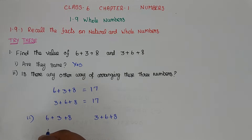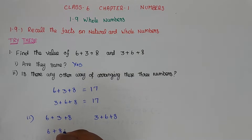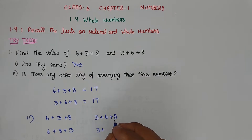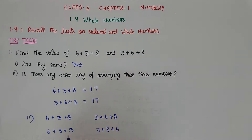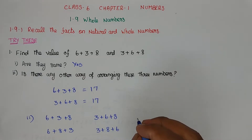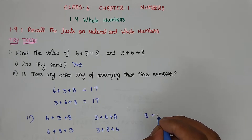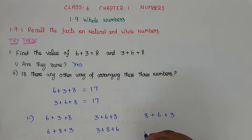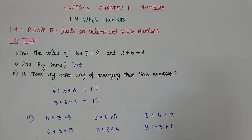One more arrangement: 6 plus 8 plus 3. That means 3 is fixed and 6 and 8 are swapped. Another: 3 plus 8 plus 6. Now with 6 fixed: 6 plus 3 plus 8. With 8 fixed: 8 plus 6 plus 3 and 8 plus 3 plus 6. So we can arrange these three numbers in 6 different forms.